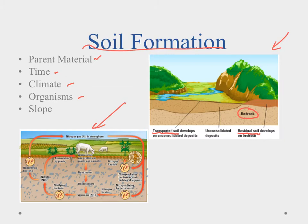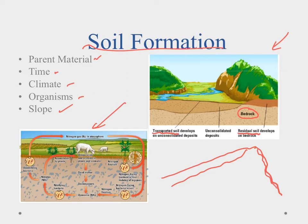Finally, slope matters. On a nice long gradual slope, soil will stick around more and form deeper. On a really steep slope, there's not a lot of places for soil to accumulate, and you end up with very thin or almost no soil at all.